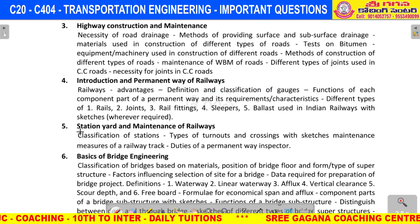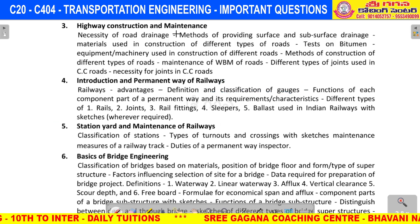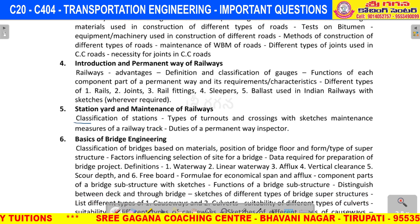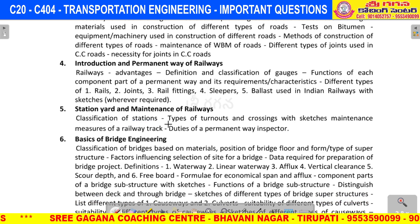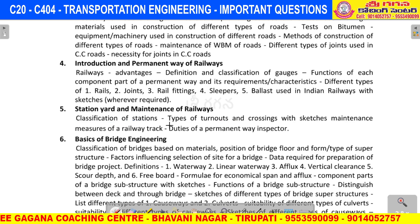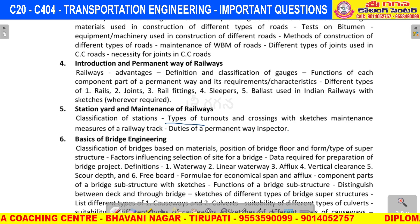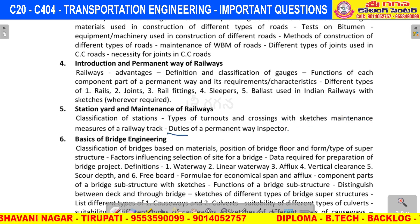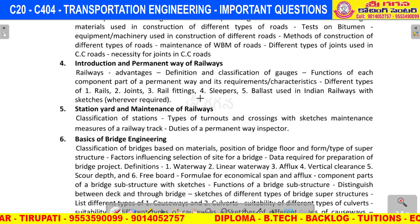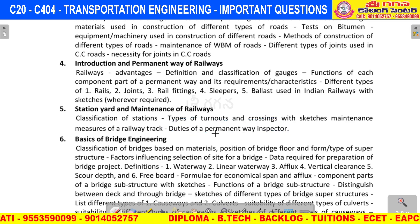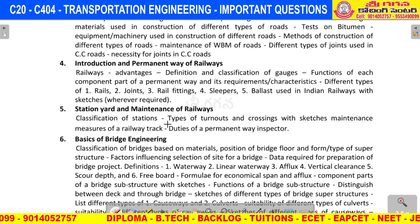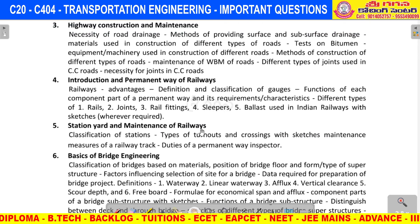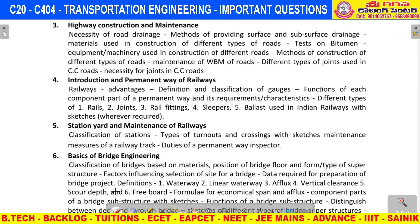The fifth and final unit covers Station Yard and Maintenance of Railways. Classification of stations is important. Turnouts - left hand turnouts and right hand turnouts - and crossings with diagrams and sketches are important questions. The duties of the Permanent Way Inspector (PWI) is also an important question. Types of turnouts and crossings with neat sketches are expected due to internal choice.